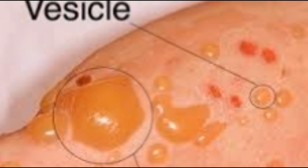The intraepidermal vesicles are sometimes specified as suprabasal, when only the basal layer remains on the floor of the blister, characteristic of pemphigus vulgaris.